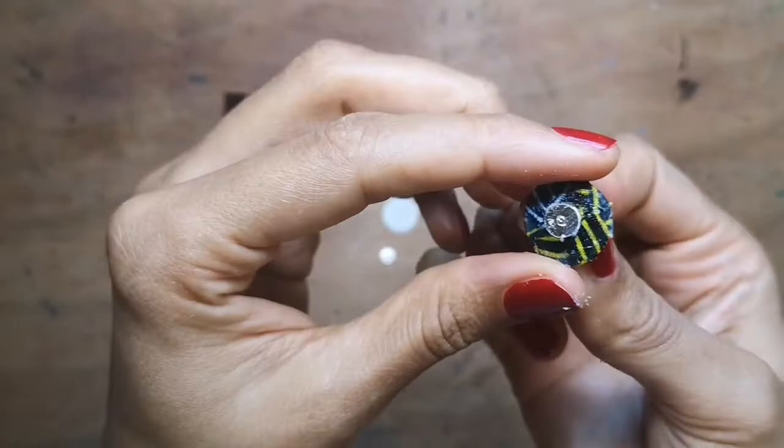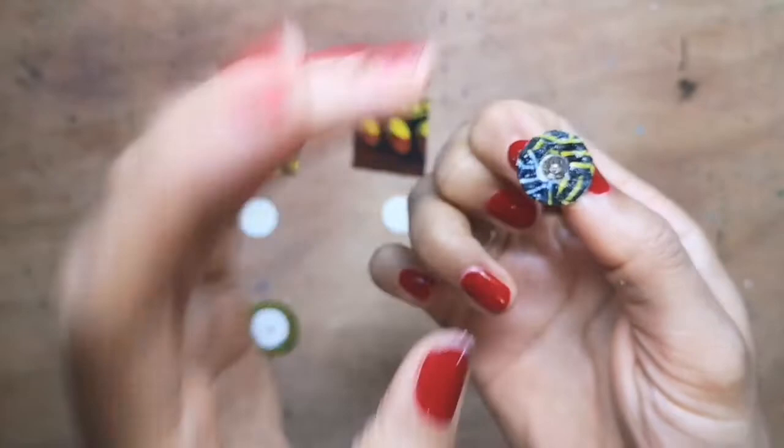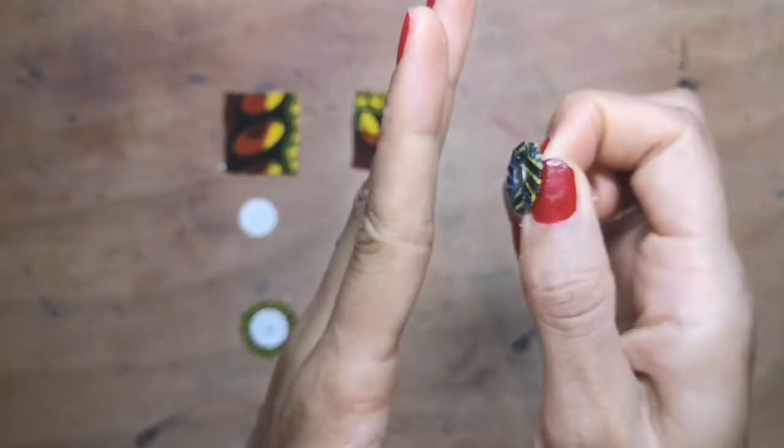You've got a fabric covered disc with the earring finding coming out. That's all right because we're going to basically sandwich the earring finding by creating another disc which will go on top so we'll have like a sandwich to secure it.